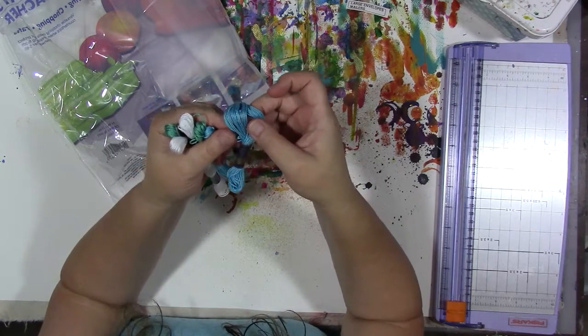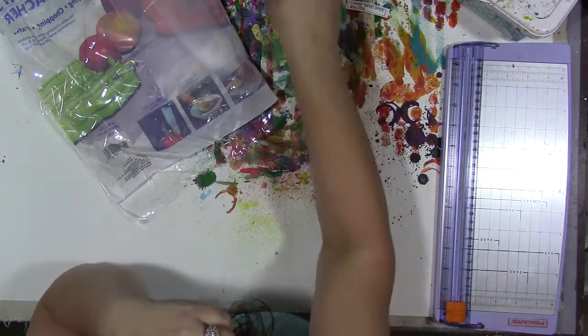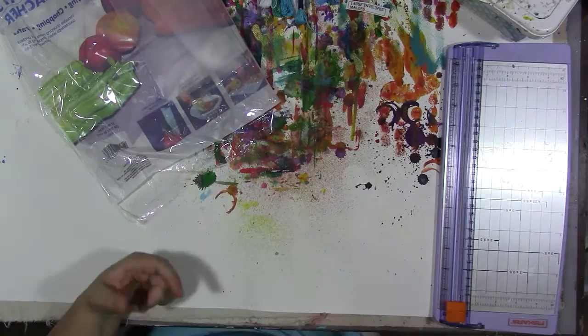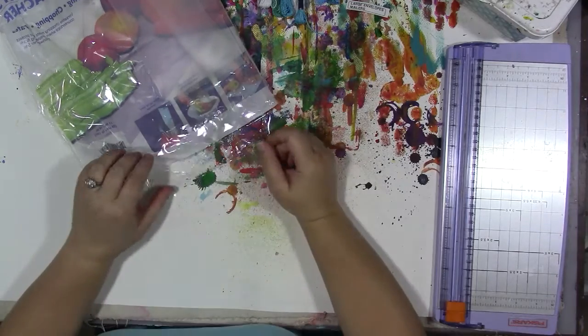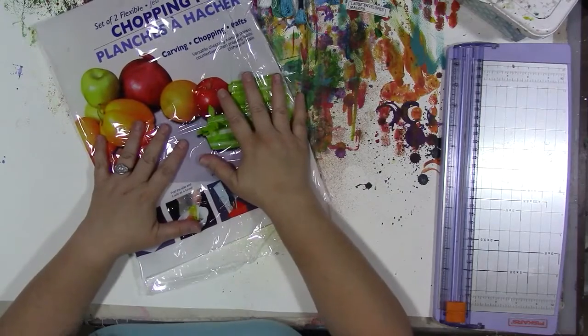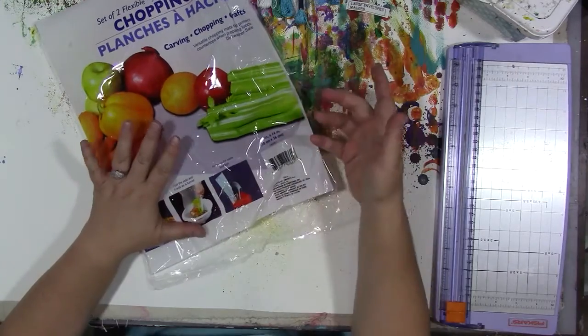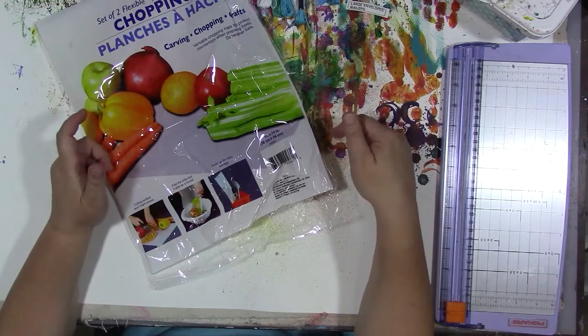What we don't use is going to go back into the donate pile. Then I have small bits and pieces left over from this package of two flexible chopping mats from the Dollar Tree. You get two of them for a dollar, they're 11 by 14.